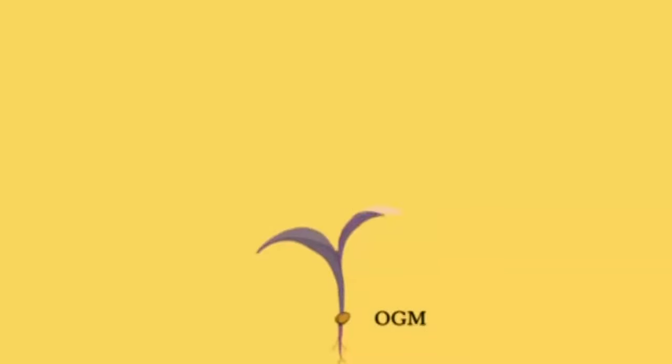Maintenant qu'on a cette cellule de maïs OGM, il n'y a plus qu'à faire un maïs entier. Le gène Bt se trouve partout, même dans les graines.